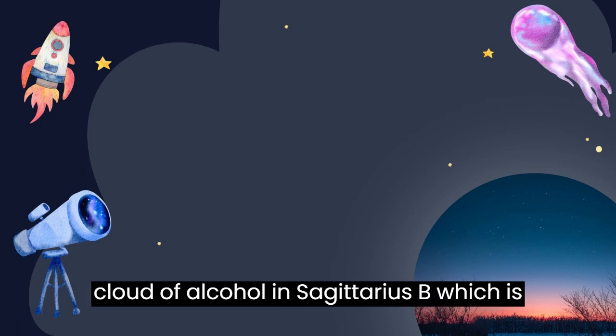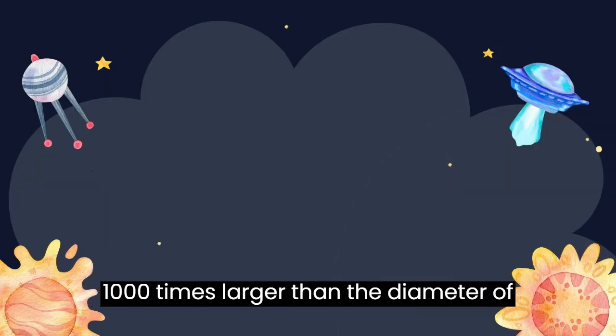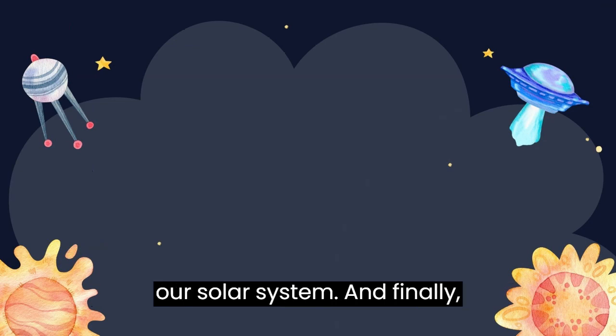There's a giant cloud of alcohol in Sagittarius B, which is 1,000 times larger than the diameter of our solar system.